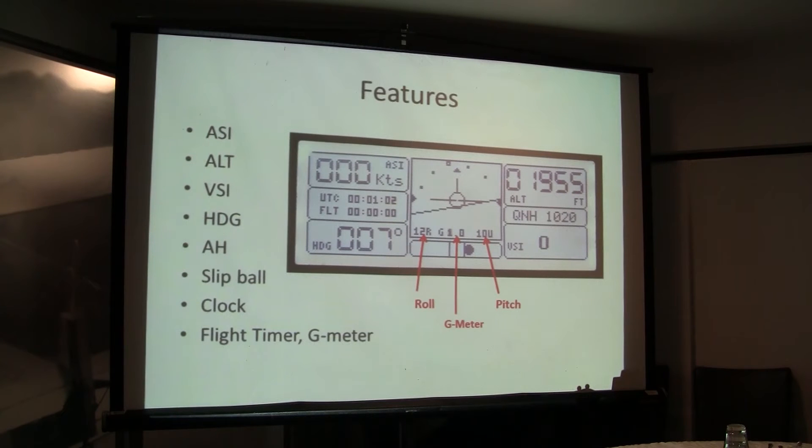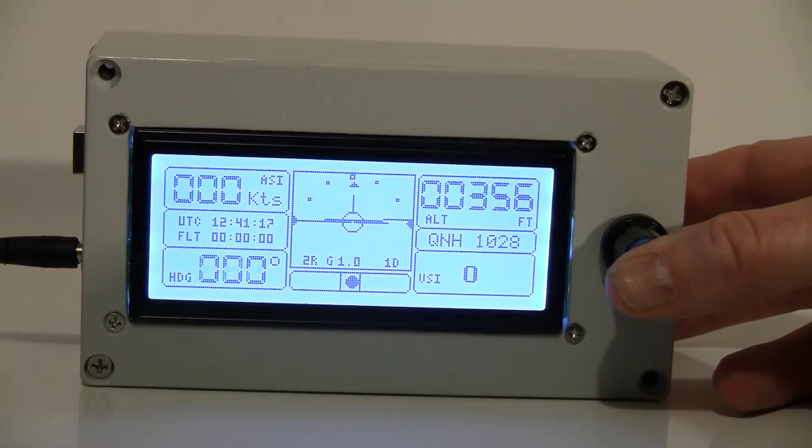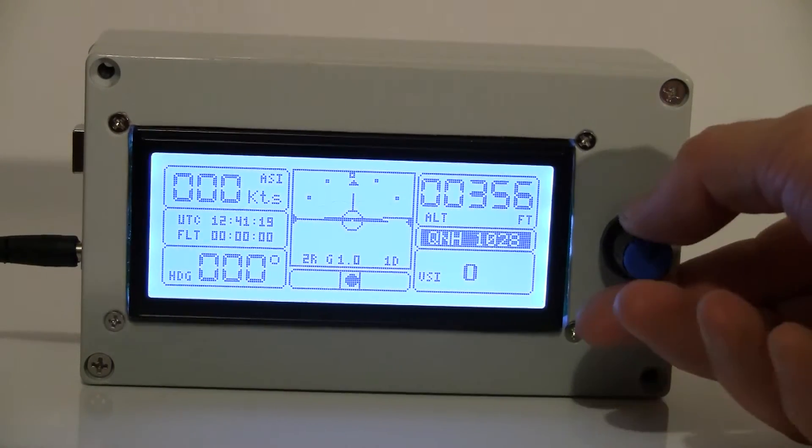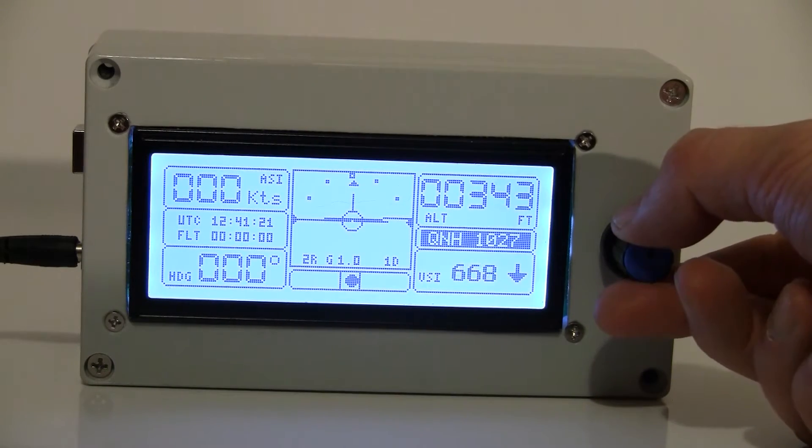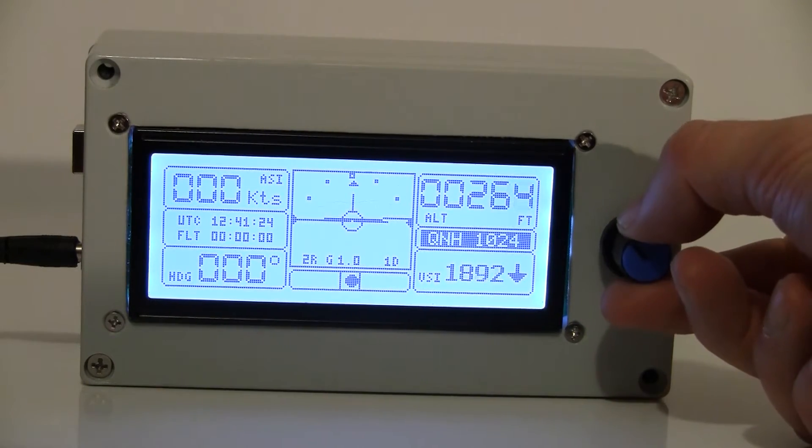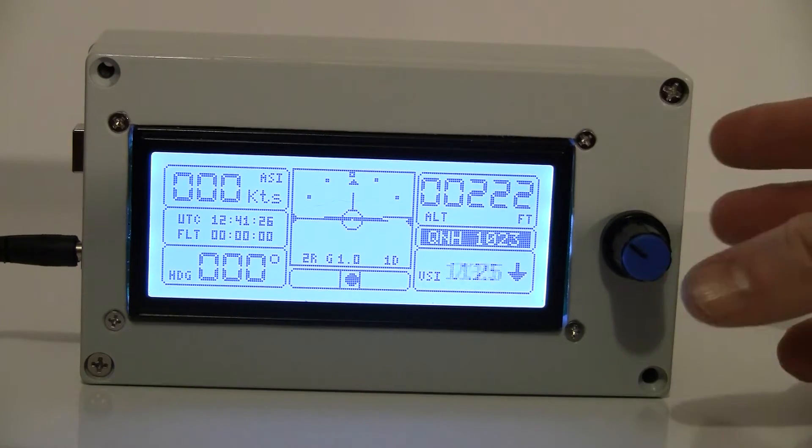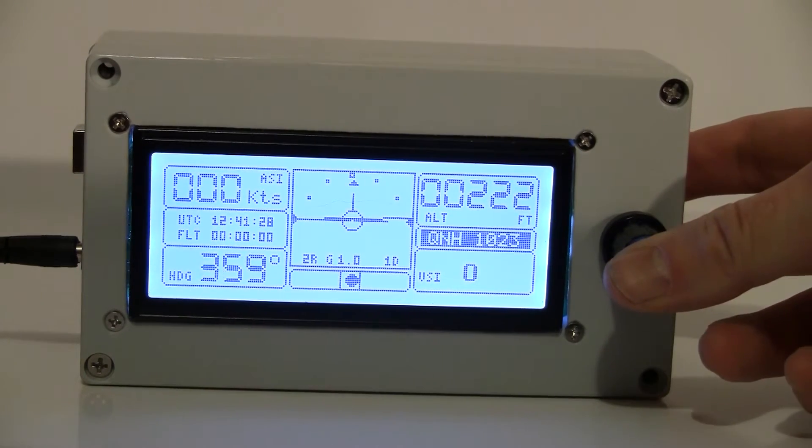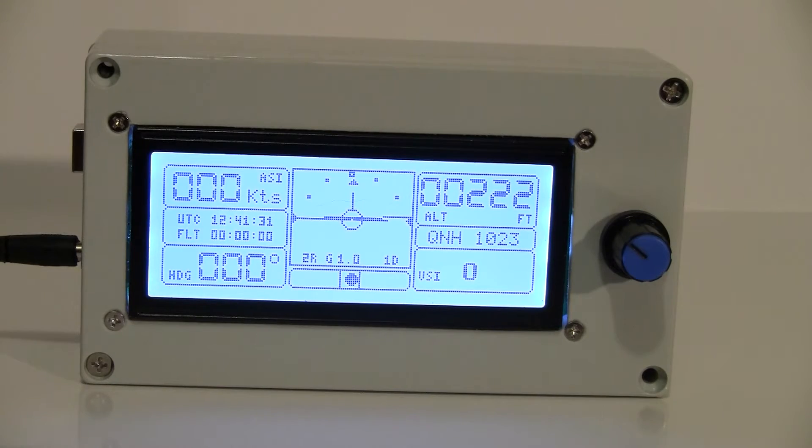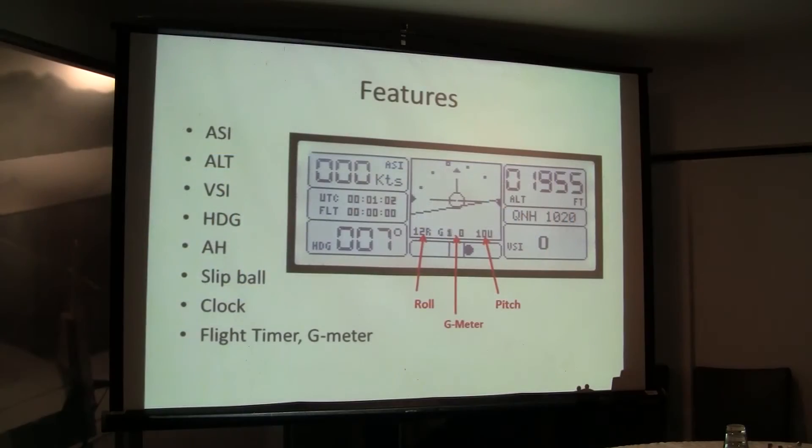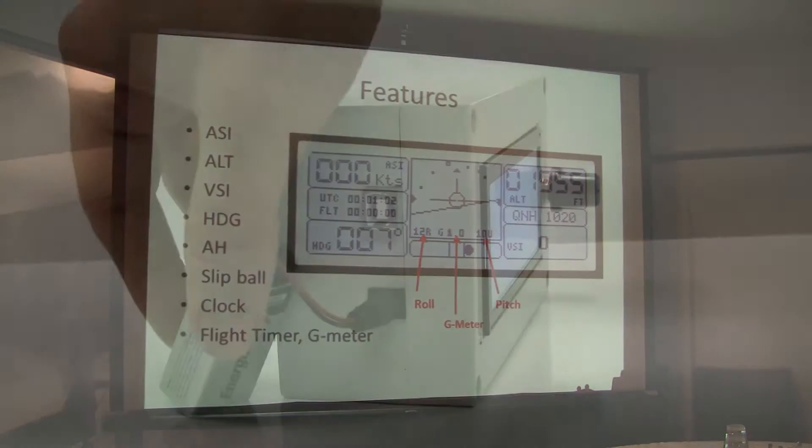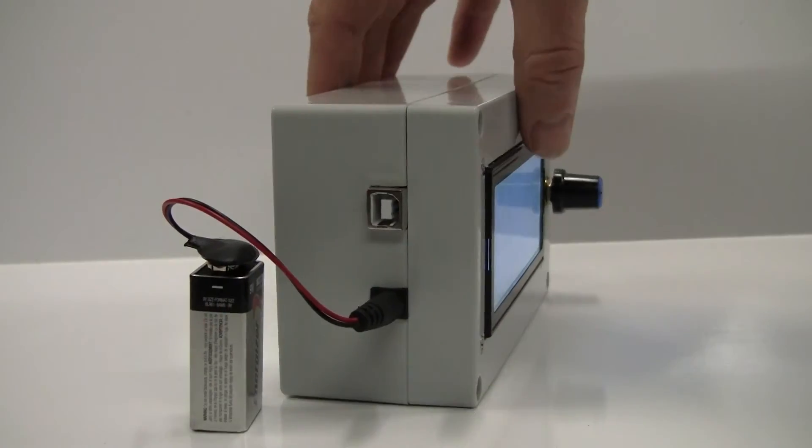All right. And we probably should set QNH. It's 1019, I think, today in Moorabbin. 1019. I just press this. So, the control, there is a control over there. You press. It's pretty much like on Dynon. You press and you adjust. There you go. Yeah. 42 feet. Almost there.